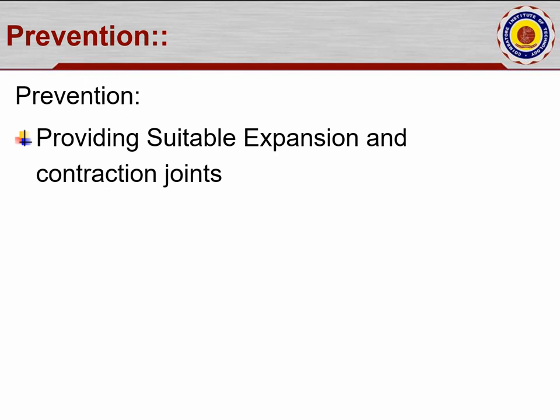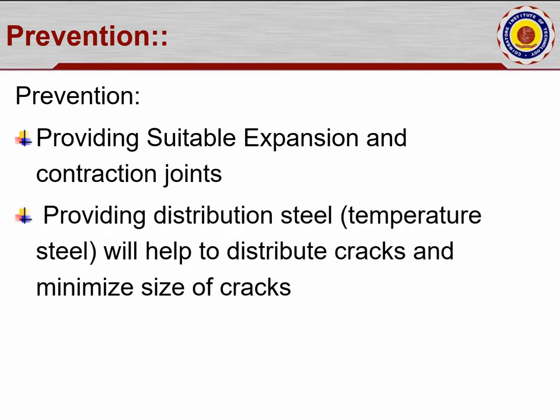In compound walls and flooring concrete over lengths of 200 meters, expansion joints with rubber material are provided. Similar to expansion joints in steel bridges using welded sections, concrete expansion joints arrest cracks so they don't develop throughout the full length — the particular portion can be repaired immediately. Providing distribution temperature steel helps to distribute cracks and minimize their size, along with quality materials and specialized steel if needed.